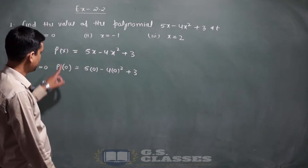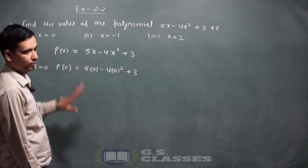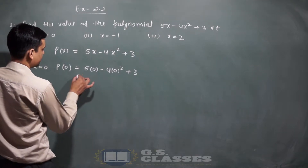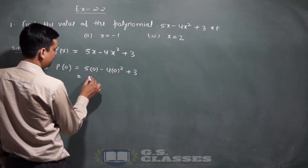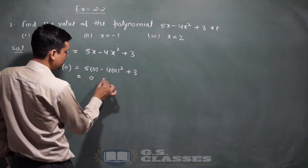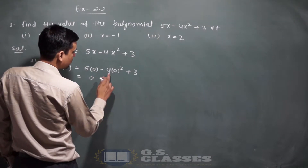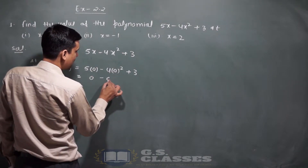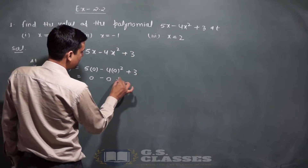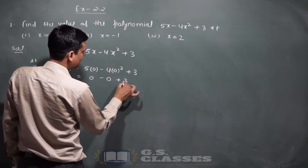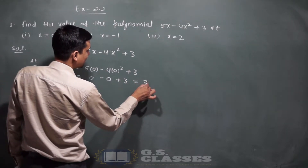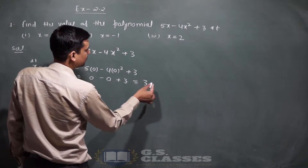समझ में आई बात — हम x की value put कर रहे हैं। Solve करते हैं: 0 multiply 5 = 0, minus 4 multiply 0 = 0, और plus 3। Final answer क्या आएगा?